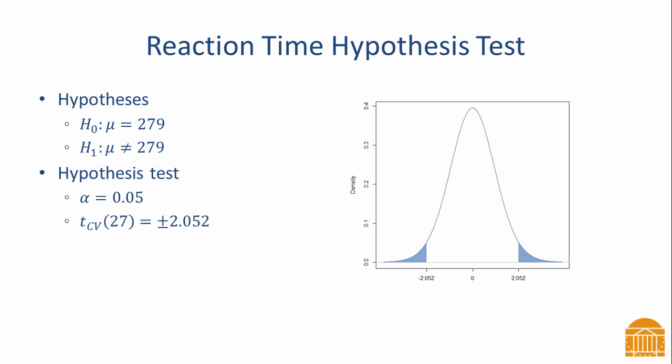The critical value is obtained with computer software or a table in a statistics book. If our test statistic is more extreme than the critical value, we will reject the null hypothesis. Plugging our sample estimates into the t-test equation, we get a value of negative 1.8265. This value is not more extreme than the critical value, therefore we fail to reject the null hypothesis.